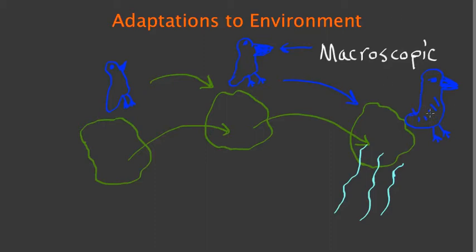So the barbules here, we actually can't see those. They exist, but we can't see them with our eyes. And so something we can't see, an adaptation that we can't see, is called a microscopic adaptation.